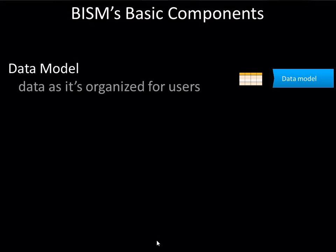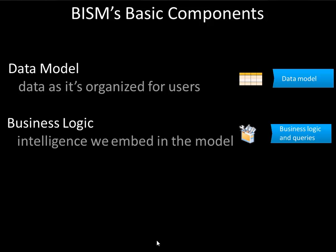The BISM has three basic components. The first is the data model itself. You can think of the data model as the data as it's organized for end users. This isn't the raw data coming out of a transactional system, and it's probably not even the data as stored in a data warehouse, but something more intelligent — really put together so that end user applications like Excel can read it and present it to users in a logical way.